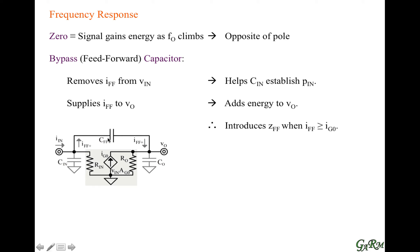The output voltage will increase with frequency whenever the capacitor current is greater than the amplifier current. At very low frequencies, the impedance across the capacitor is very high, so the capacitor current is low and has no impact on the output. At very high frequencies, however, the impedance is very low, so the capacitor current is very high, and the output receives considerable energy from that capacitor and increases.